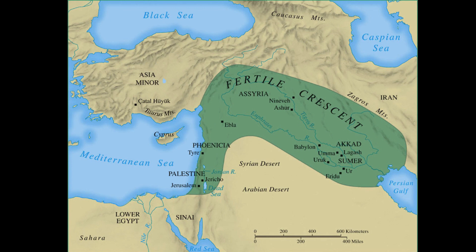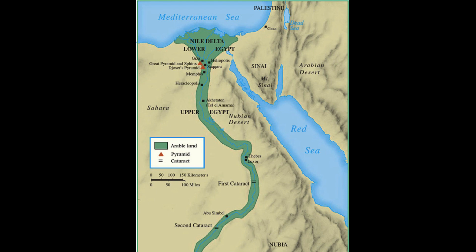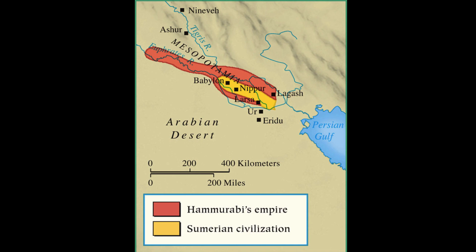Civilization developed elsewhere in the world, but in the west it was in the river valleys of Mesopotamia — or the land between the rivers, in this case the Tigris and Euphrates rivers — and in Egypt where civilization first appeared. By 3000 BC, ancient Mesopotamia was a city-state civilization in southwest Asia, created by a people known as the Sumerians. The rivers were tamed, but remained unpredictable, affecting both the religion and the arts, notably in the Epic of Gilgamesh.